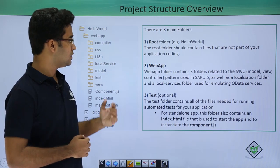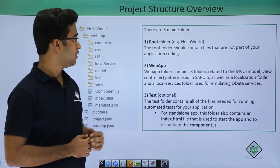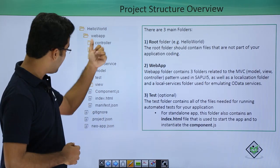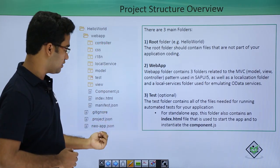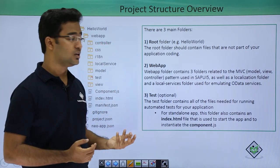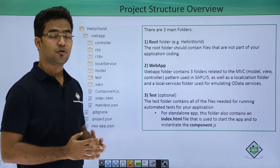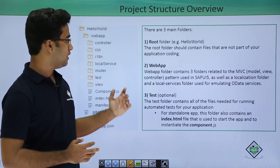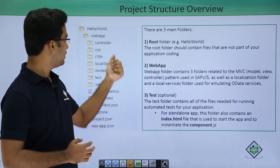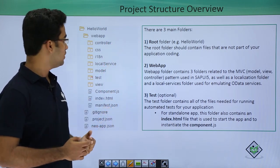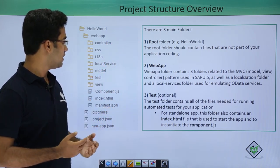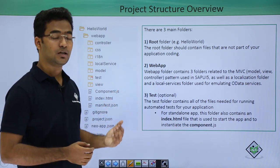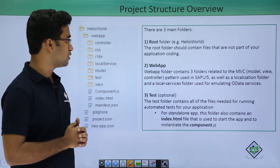The root folder here is Hello World, which consists of the web app folder and these three files. Basically no coding is done in the root folder — these files are just for project settings. The web application folder consists of controller, CSS, i18, and all other folders and files, and all the coding is done in these files.